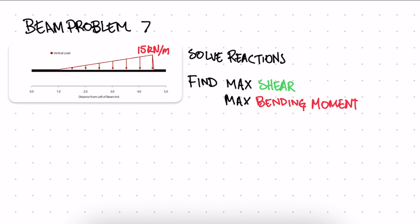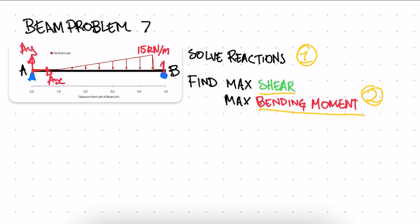Welcome to another beam tutorial. In this example we have a simply supported beam, with a pin on one side and a roller on the other side. We need to find the reactions, and then in the second video we'll find the max shear and the max bending moment. Point A is on the pin side and point B is on the roller side. We have a triangular distributed load of 15 kilonewtons per meter at the highest point.